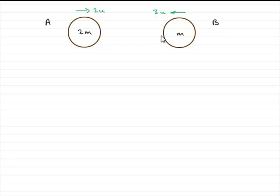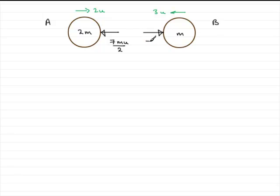When they hit one another, they hit one another with an impulse, we're told, of 7mu over 2. So A is going to get a bang, if you like, in this direction. That impulse is going to have a magnitude of 7mu over 2. And there'll be an equal and opposite impulse on B — that is also 7mu over 2.